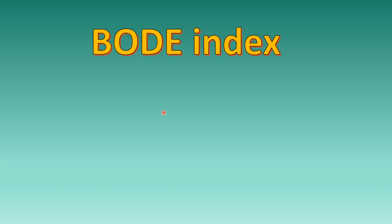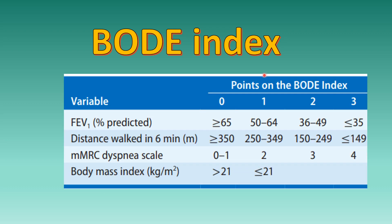One such index is the BODE index. As the name suggests — B for Body mass index, O for Obstructive effect showing FEV1, D for Dyspnea scale using MMRC, and E for Exercise intolerance measured as distance walked in 6 minutes.